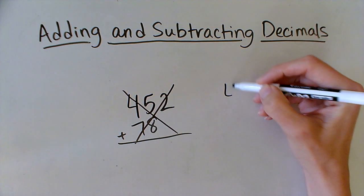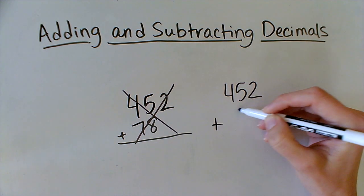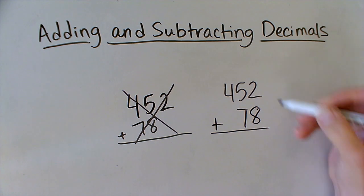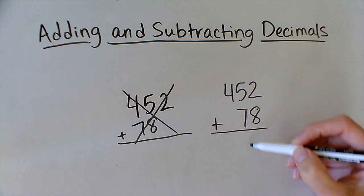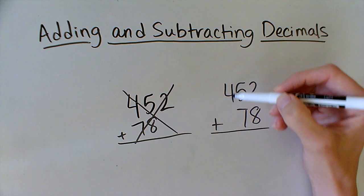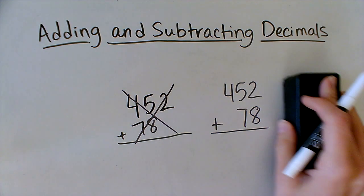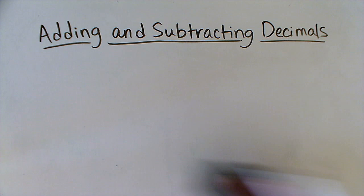To solve 452 plus 78, I need to make sure that the ones place stays lined up, the tens place stays lined up, and the hundreds place stays lined up. The same is true for adding and subtracting decimals.